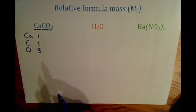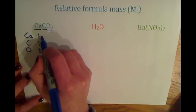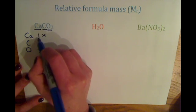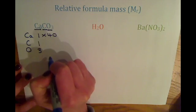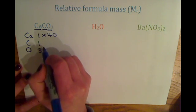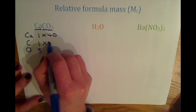So now we know these numbers, we can calculate the relative formula mass. So calcium, we said the relative atomic mass was 40, so we need one atom of calcium times by 40. Carbon, we said the relative atomic mass was 12, so one atom of carbon times by 12.